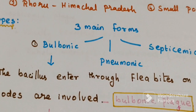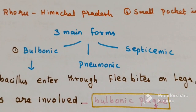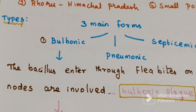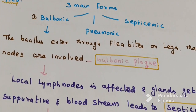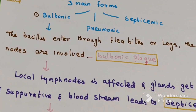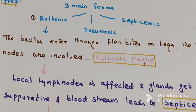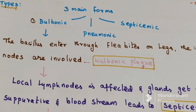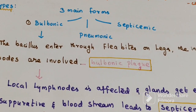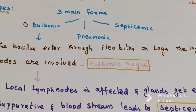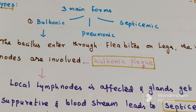There are three forms of plague: Bubonic, Pneumonic, and Septicemic. First, we will discuss Bubonic plague. The bacilli enter through flea bites on the legs. The inguinal nodes are involved, that's why it is called Bubonic plague.